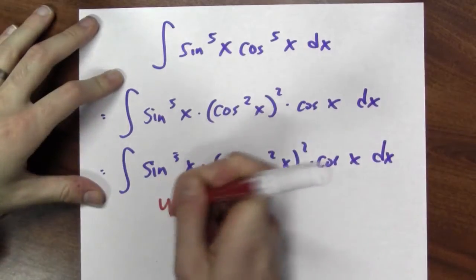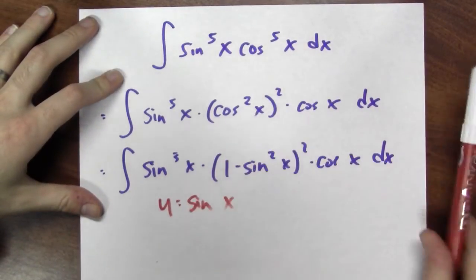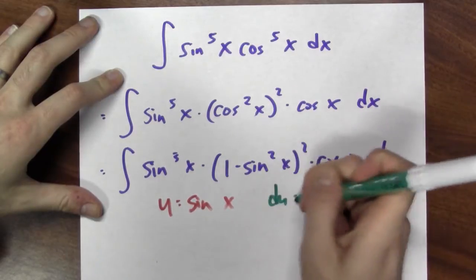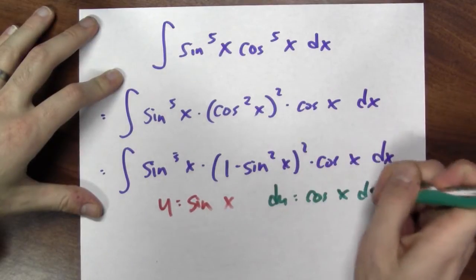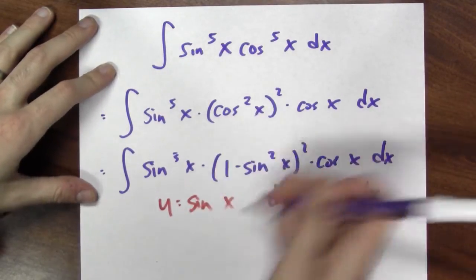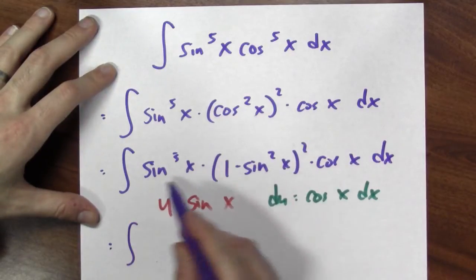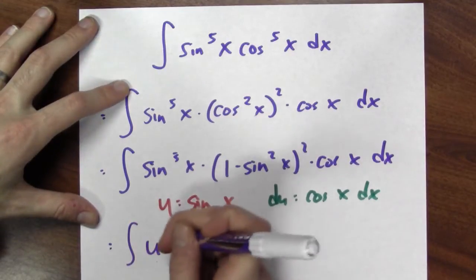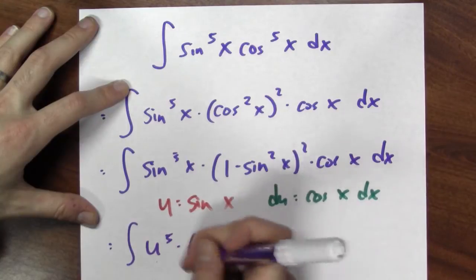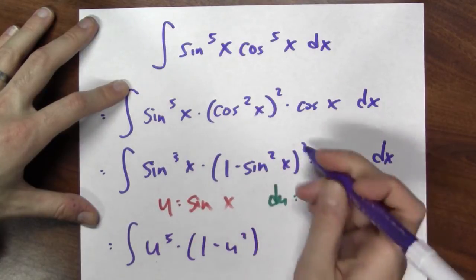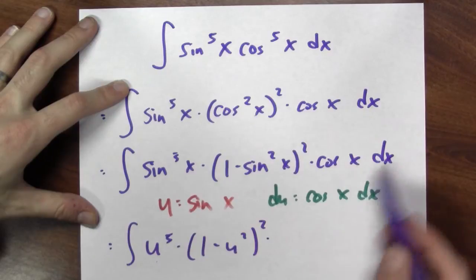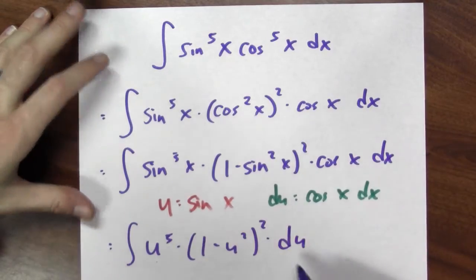And now we can finish by making a substitution. So I'll make the substitution u equals sine x. In that case, du is cosine x dx. So the integral becomes, instead of sine to the 5th, it's u to the 5th. 1 minus sine squared is 1 minus u squared, and that's squared. And cosine x dx is du.